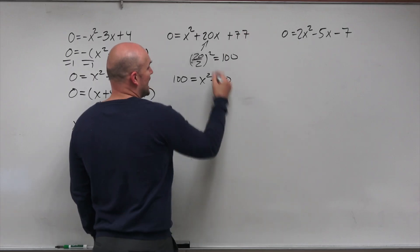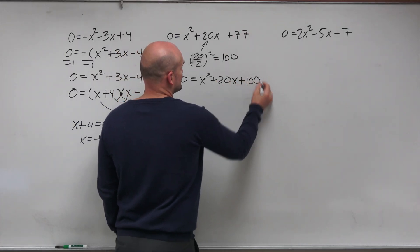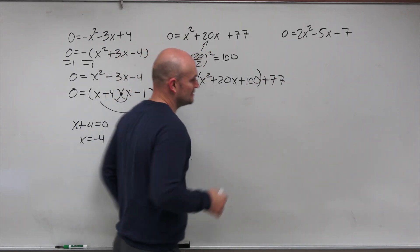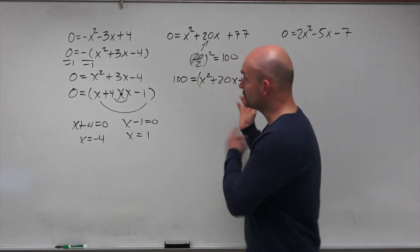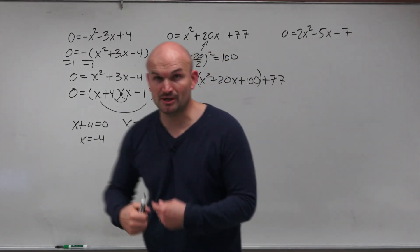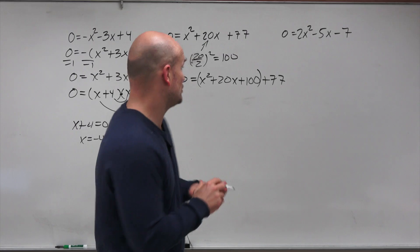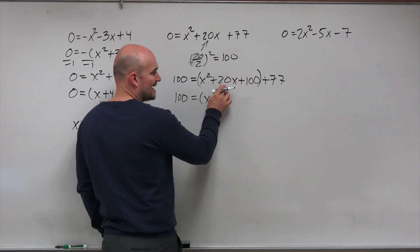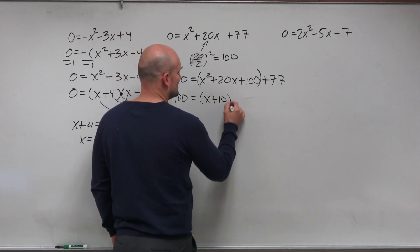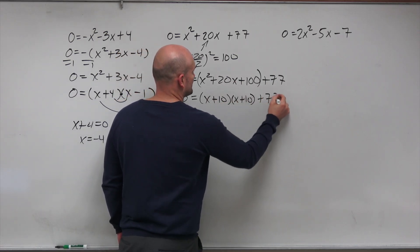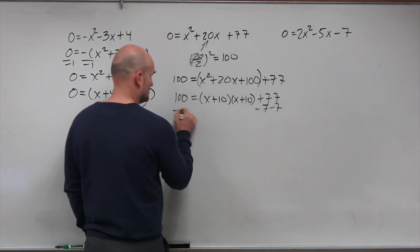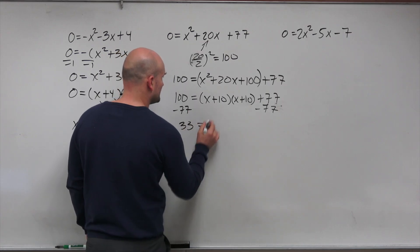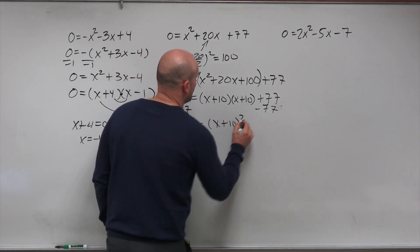Rather than adding it to the outside of the 77, I'm going to add it before the 77. That creates a perfect square trinomial. Going back to my factoring technique — when you create a perfect square trinomial, it factors down into a binomial squared. What two numbers multiply to give you 100 and add to give you 20? That's x plus 10 times x plus 10, plus 77. Now I subtract 77 from both sides and get 33 equals x plus 10, quantity squared.